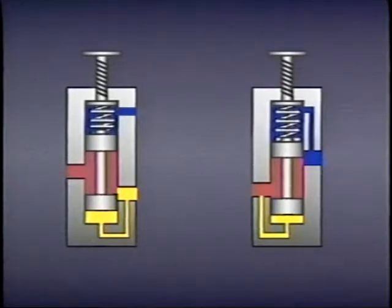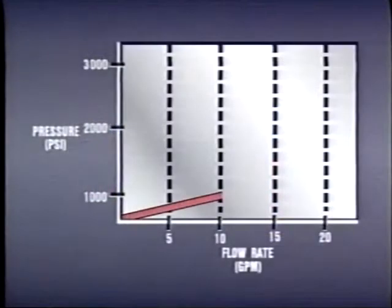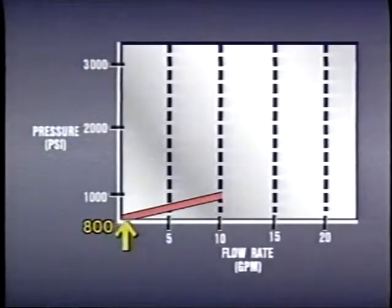However, the pressure at which the spool first begins to move, the cracking pressure, is less than the pressure at which the valve is set. For example, a valve set at 1,000 PSI may pass 10 gallons per minute at that pressure. However, it might crack open at 800 PSI, then pass more and more fluid until it reaches full flow at 1,000 PSI.